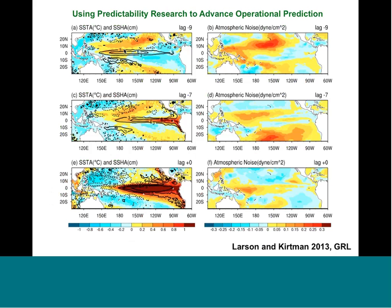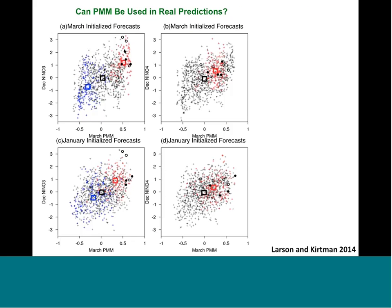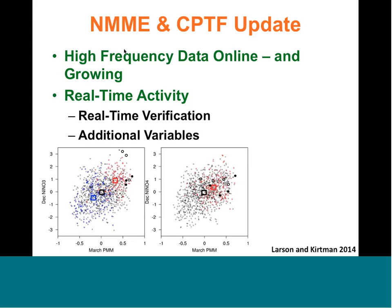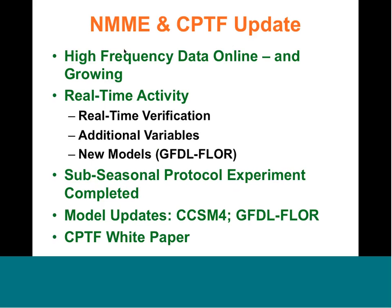Just to summarize: this is the status of the NMME project and also the Climate Prediction Task Force. The Climate Prediction Task Force has two things we're working hard on — the white paper, and we're also writing the prospectus for a virtual workshop on bias correction that we're hoping to host very soon. The NMME mailing list and CPC website have links to the data server.